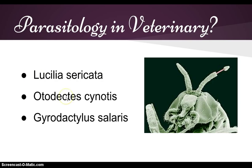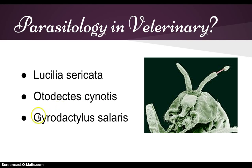Another example of parasitology is Otodectes cystosis, the cat ear mite responsible for ear canker. And Gyrodactylus salaris, a monogenean parasite of salmon, which can wipe out populations that are not resistant.